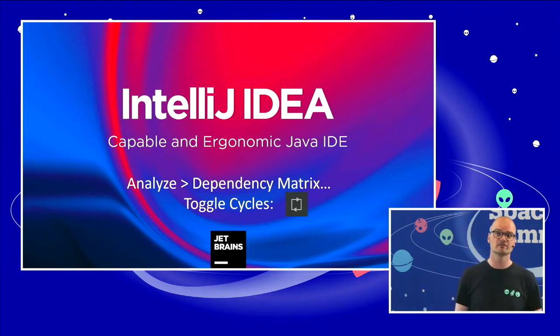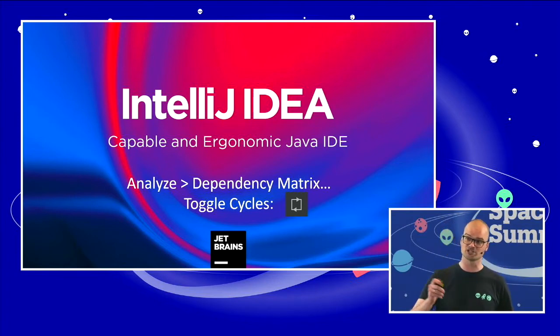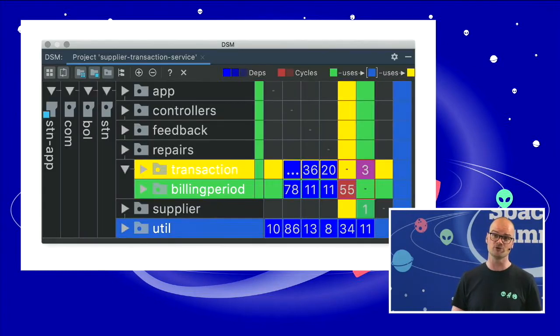It's like two clicks in IntelliJ. If you go to analyze dependency matrix in the menu. You press the toggle cycles button. And that's just to make it nicer. It will only highlight some stuff for you. It's still very informative otherwise. And this is what it will show you.